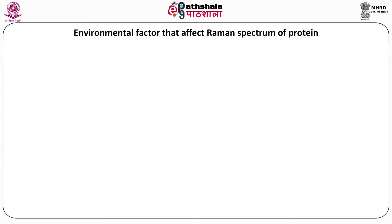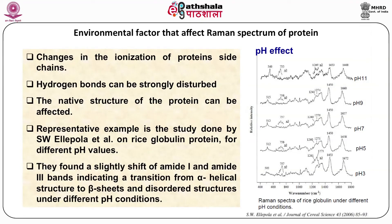Environmental factors affecting the Raman spectrum of protein: changes in ionization of protein side chains cause changes in the Raman spectrum. Hydrogen bonds can be strongly disturbed and the native structure of the protein affected. A representative study by H.W. Eloppa et al. on rice globulin protein at different pH values (pH 3, 5, 7, 9) showed slight shifts in the amide-1, -2, and -3 bands, indicating a transition from alpha-helical structure to beta-sheet and disordered structures under different pH conditions.